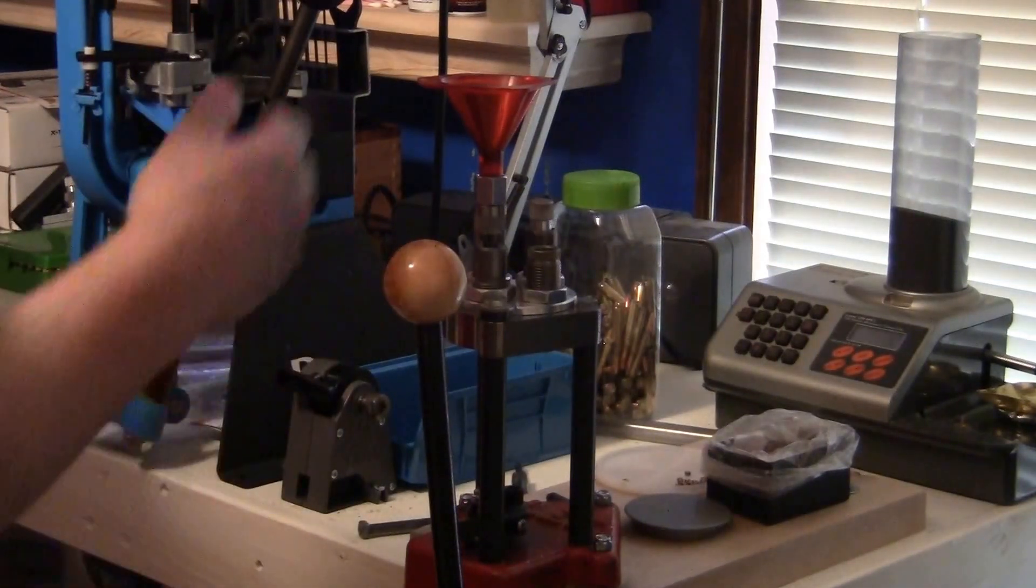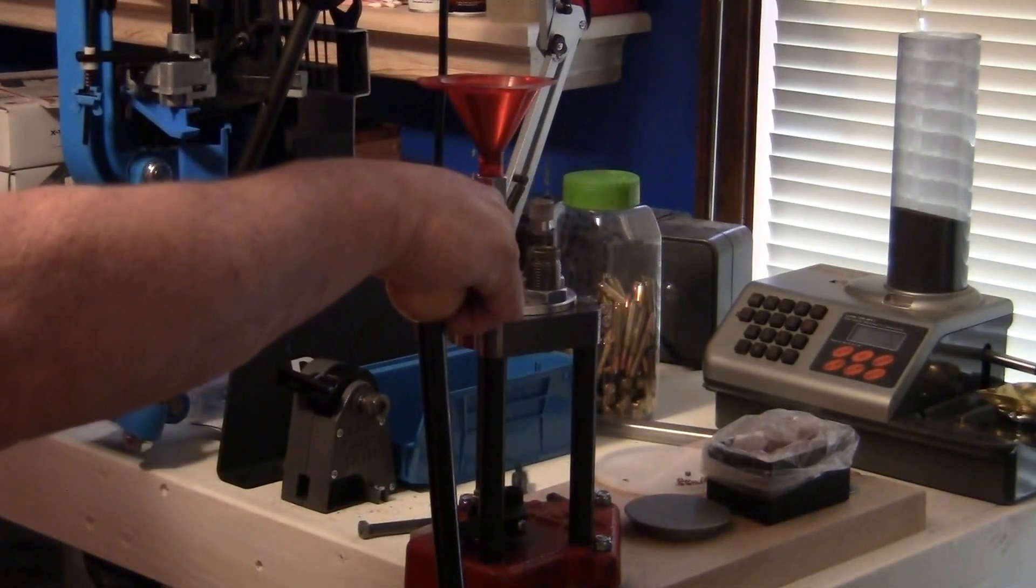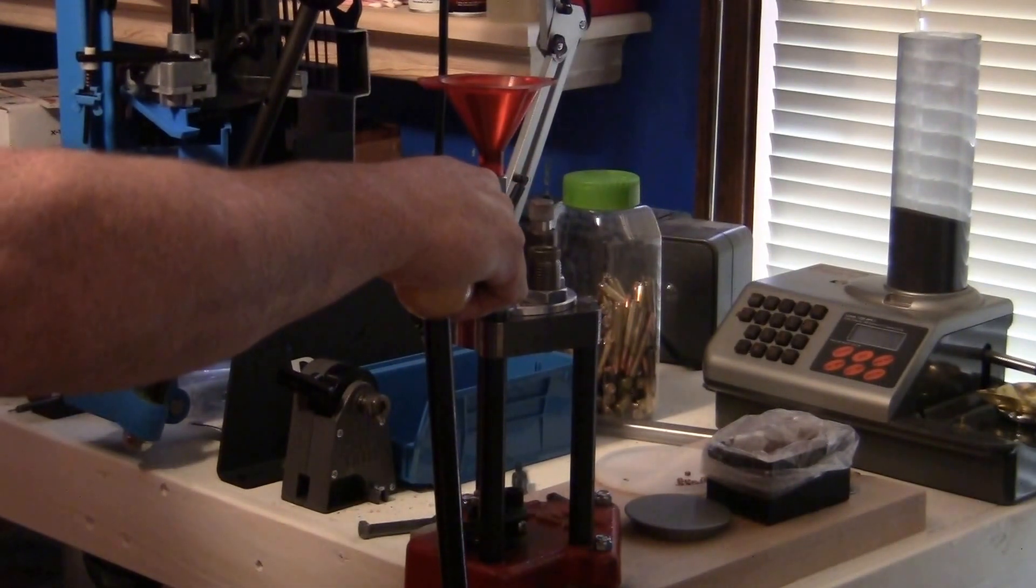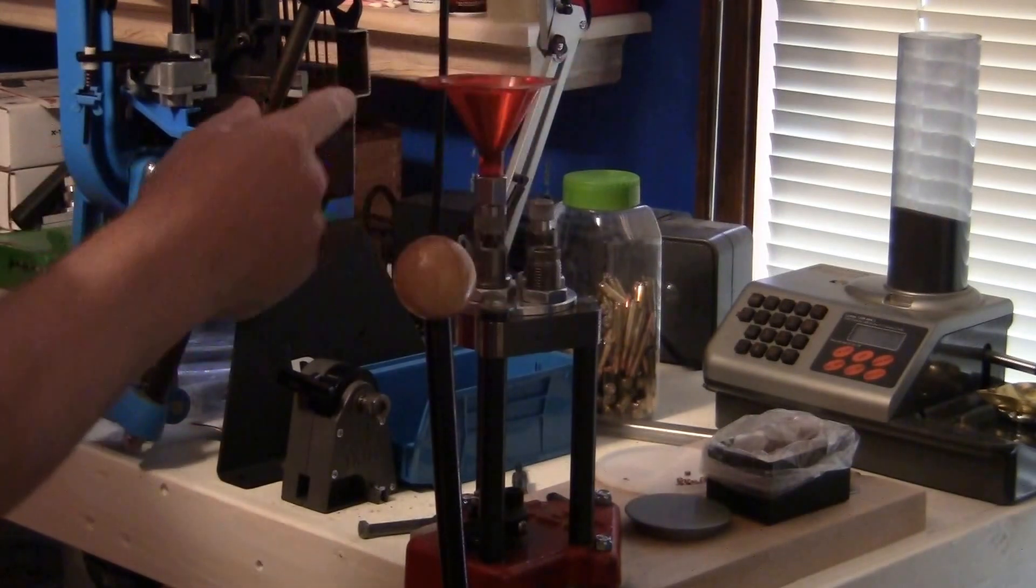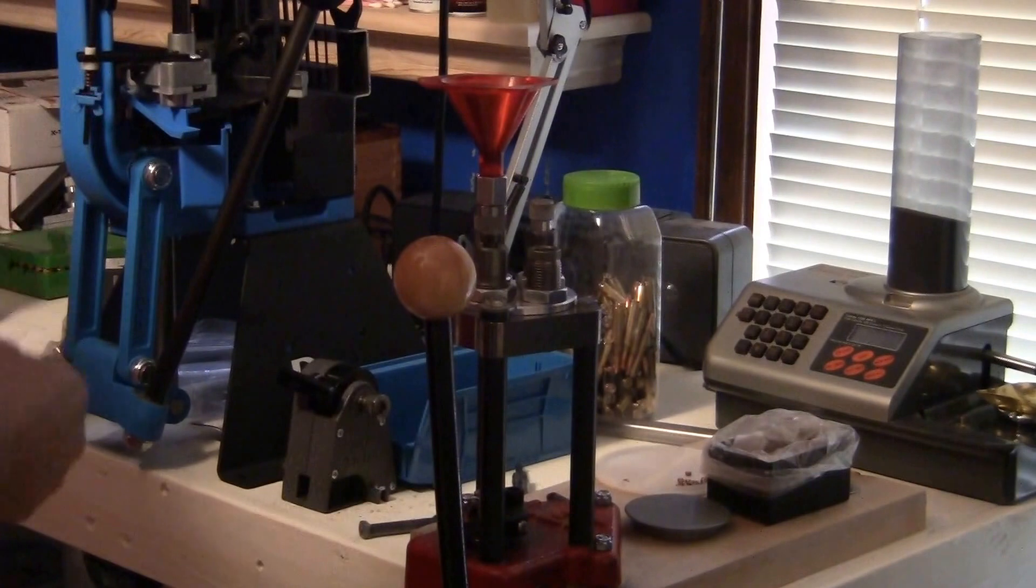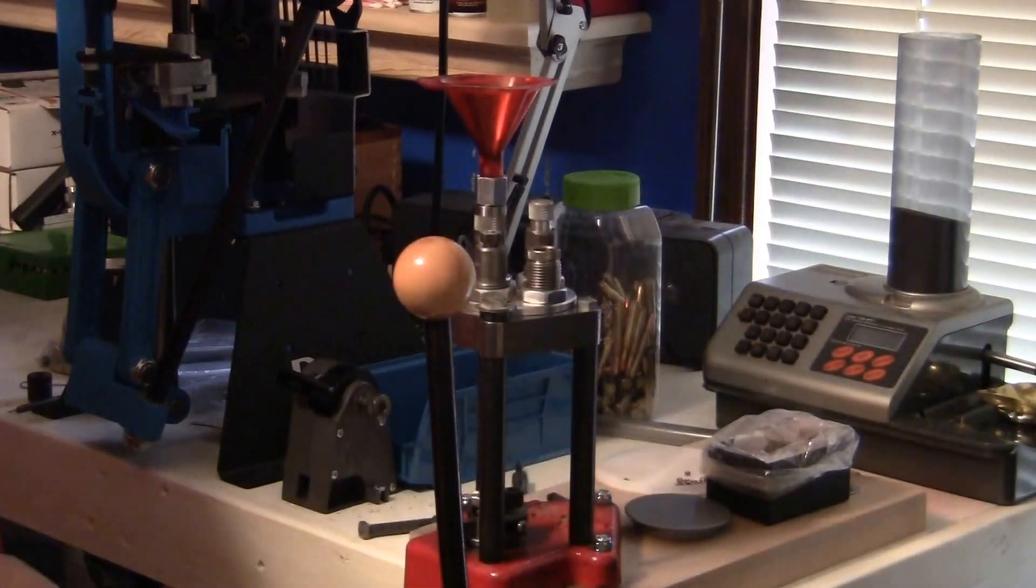They're inexpensive. You get a four die set with the shell holder for less than what you would pay for an RCBS or a Hornady set, and in my opinion it's just as good. The only thing wrong with the Lee die is they're fairly short when it comes to using them in a Dillon, because the tool head on the Dillon is really thick.